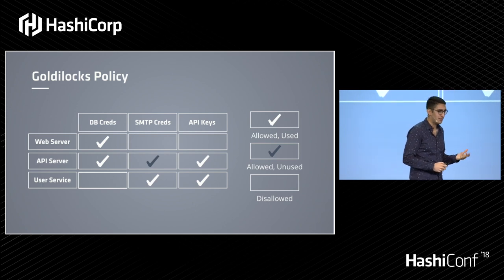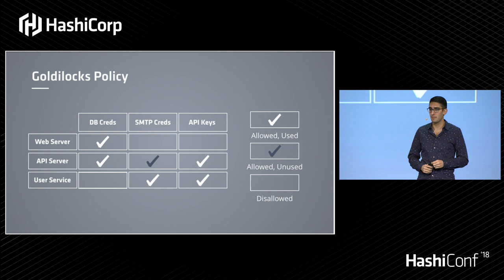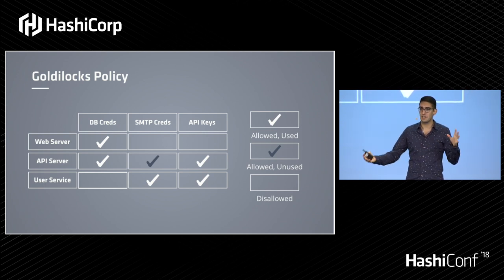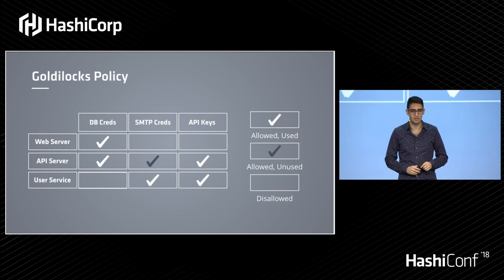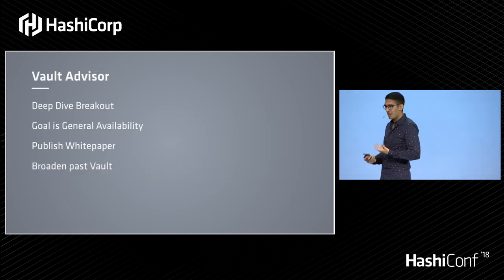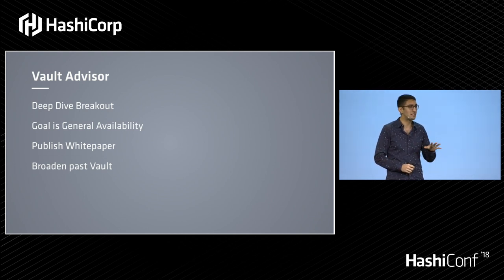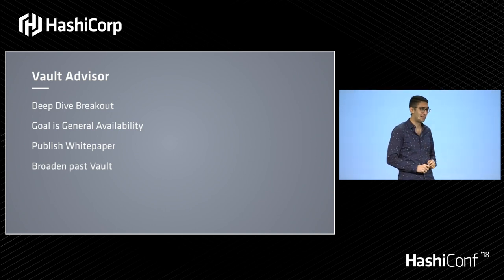What makes this problem hard — and what's not obvious in this trivial example — is that there's an explosion in the number of possible ways of solving this. This problem is NP-hard. In this trivial example you could almost visualize all the possibilities, but if you scale this up to a matrix as small as 10 by 10 — 10 entities and 10 secrets — all of a sudden there's an essentially infinite number of ways you could solve that problem. There's going to be a great session tomorrow by our research team doing a deep dive into Vault Advisor and how it works, so I highly recommend it.